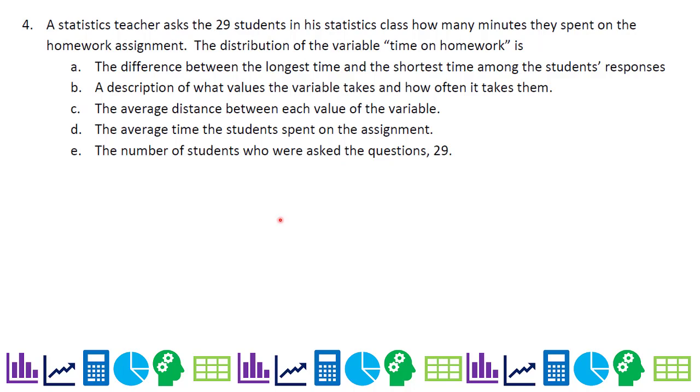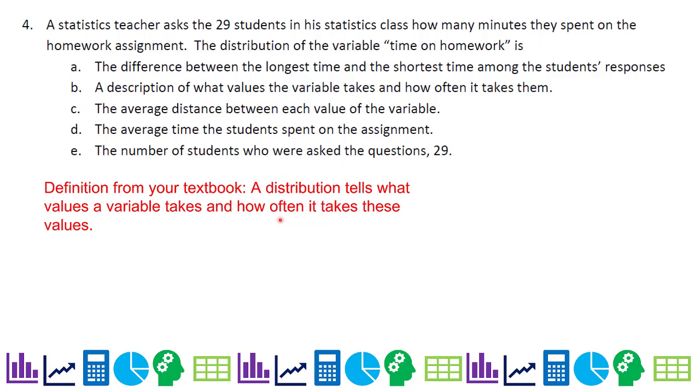A description of what values a variable takes and how often it takes them, that's actually a definition from your textbook. A distribution tells you what values a variable takes and how often it takes these values. We can get averages for distributions, but we're not saying one number is the distribution. The distribution is all the data put together. So the answer is B.